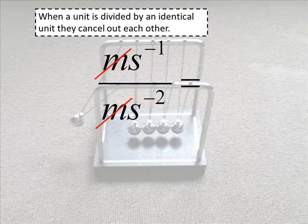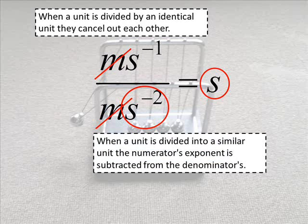If the unit is divided by the same unit, they cancel out. If the unit is divided by another similar unit with exponents, we subtract the exponents to work out the exponents of the answer. Here we've got minus 1 minus minus 2, which is minus 1 plus 2. That becomes plus 1, or s to the power 1, or just s.